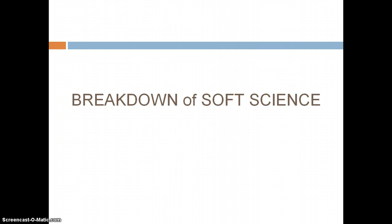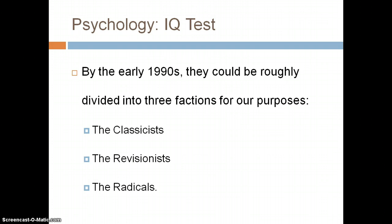Breaking down soft science. Soft science is a science like psychology — it's not truly rigidly defined, but it has enough statistical base. Psychologists use IQ tests all the time. By the early 1990s, approaches could be roughly divided into three purposes: the classic, the revision, and the radicals.